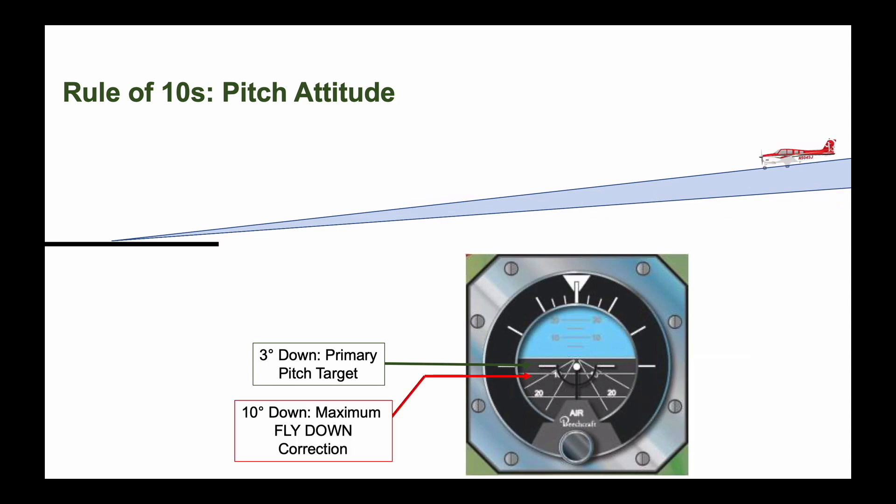If you're high on glide slope, you might pitch the nose down to reacquire, perhaps in conjunction with a small power reduction. But do not let the nose drop below 10 degrees below the horizon. This may seem like a steep angle, and it is, but under some conditions you may be making an approach at a steeper angle than normal also.